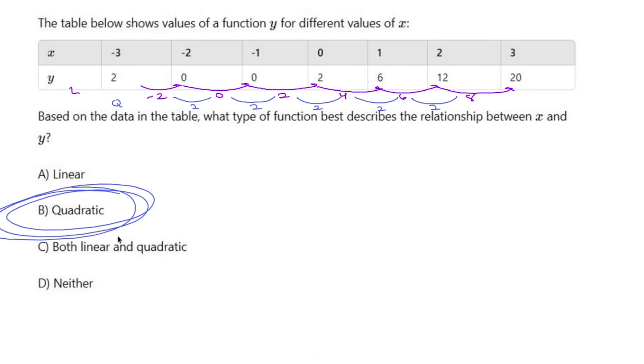So that's going to be our answer. No such thing as both. And neither would be if the quadratic gets you a different number. But since the quadratic gave you a constant 2 every single time, we can say it is quadratic.